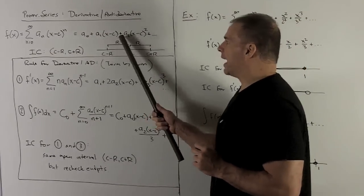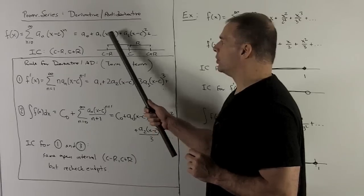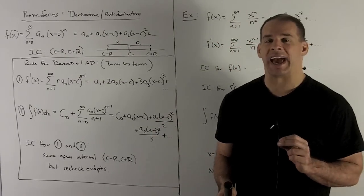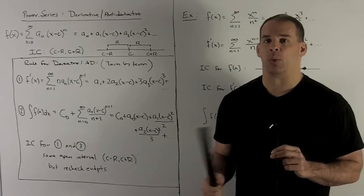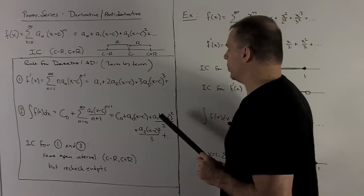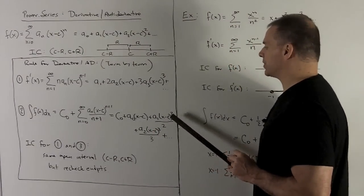Antiderivative of a one x minus c, you can do a u substitution with u equal to x minus c, then du equals dx. And then the rule is just add one, flip it over for you. So that'll go to a one over two times x minus c squared.